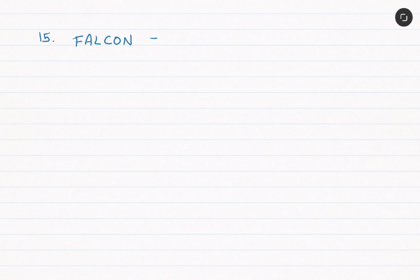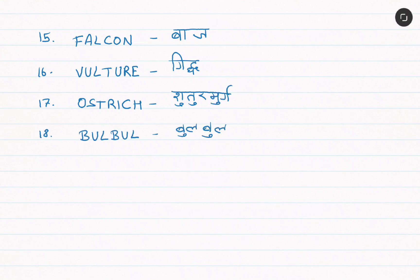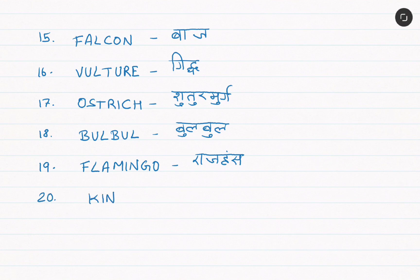Fifteenth, falcon, that is baj. Sixteenth, vulture, that is gidd. Seventeenth, ostrich, sutur murg. Eighteenth, bulbul. Nineteenth, flamingo, that is raj hunts. Twentieth, kingfisher, and that is ramchiraya.